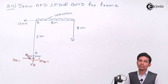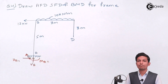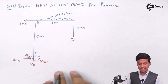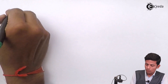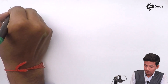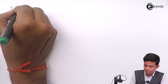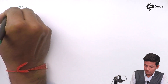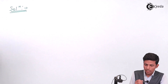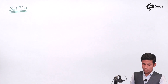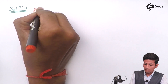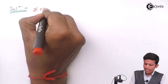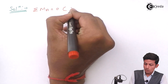In the support reaction we get the values of MA, HA, and VA. Now taking moment at A equal to zero.